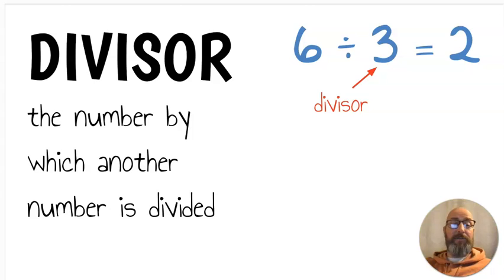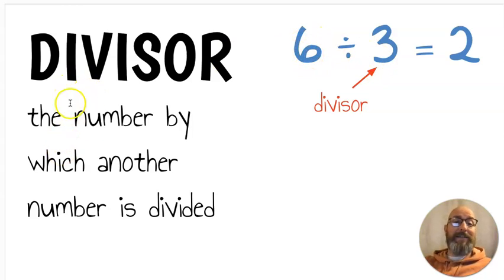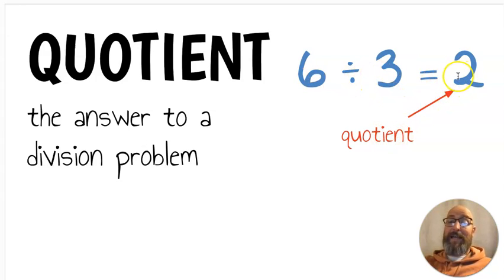Next we have the word divisor. A divisor is the number by which another number is divided. Six divided by three equals two — the divisor is three, that's what six is divided by. A quotient is the answer to a division problem. Six divided by three equals two — two is the answer, which means it's the quotient.